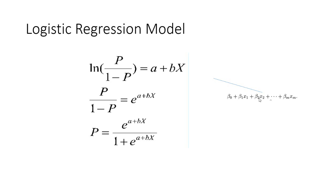When you work on the logit equation and take the exponential of the right-hand side, it becomes the exponential of the linear value a plus bx. Doing further algebraic manipulation, you will find that the probability P equals exponential of (a plus bx) divided by one plus exponential of (a plus bx). Our objective is to find the value of P, and using this last equation, the value of P can be found out from the right-hand side.